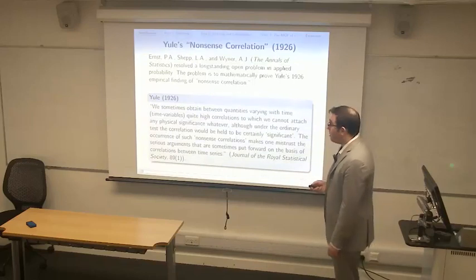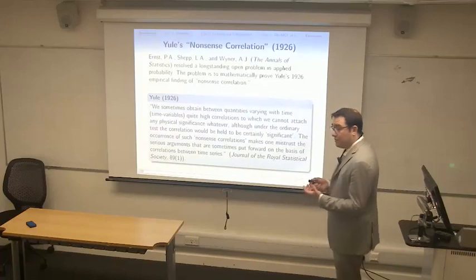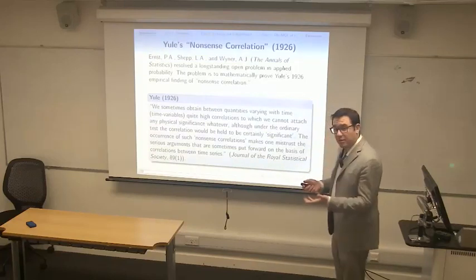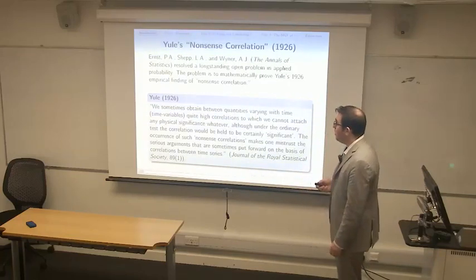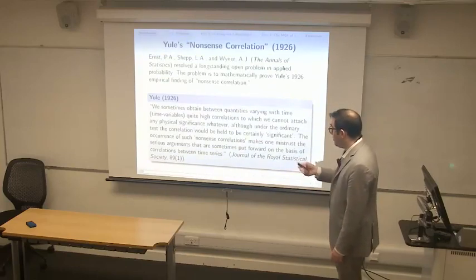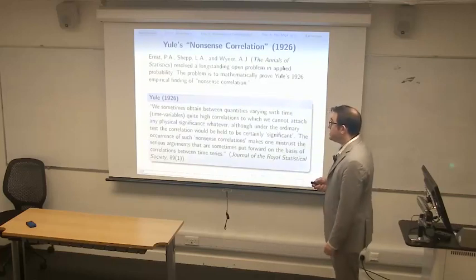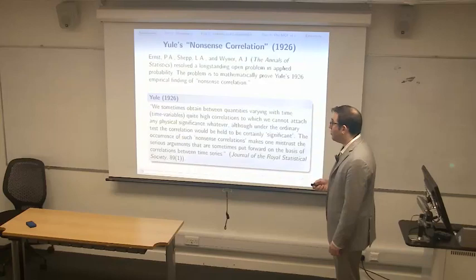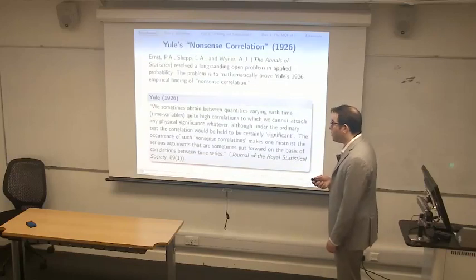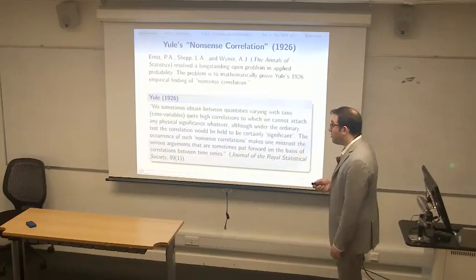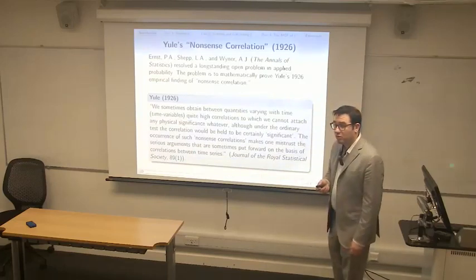Of the many papers that he wrote, there was one 1926 paper about nonsense correlation that we're going to be speaking about today. The excerpt from the 1926 paper in the Journal of the Royal Statistical Society says: we sometimes obtain between quantities varying with time quite high correlations — by this he meant the Pearson correlation — to which we cannot attach any physical significance whatever, although under the ordinary test, meaning the t-test, the correlation would be held to be certainly significant. The occurrence of such nonsense correlations makes one mistrust serious arguments sometimes put forward on the basis of correlations between time series.